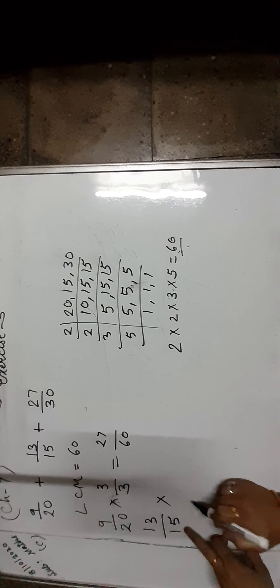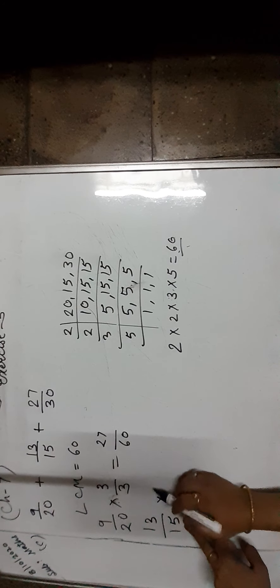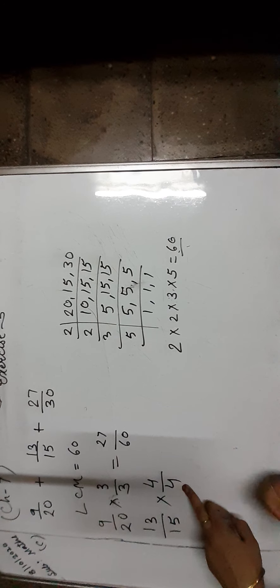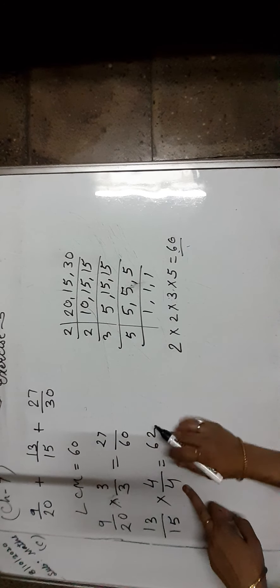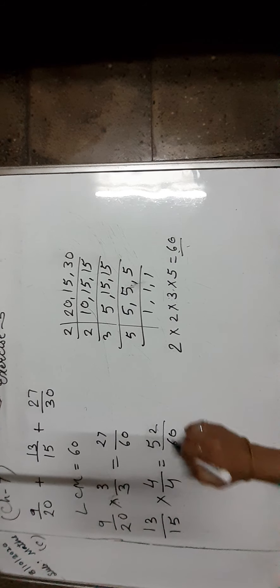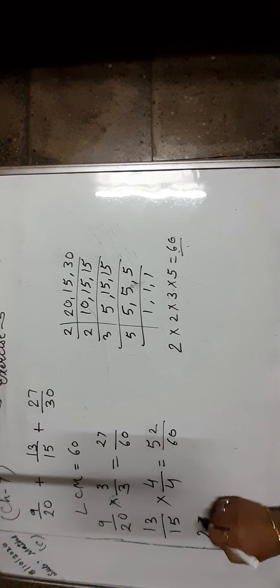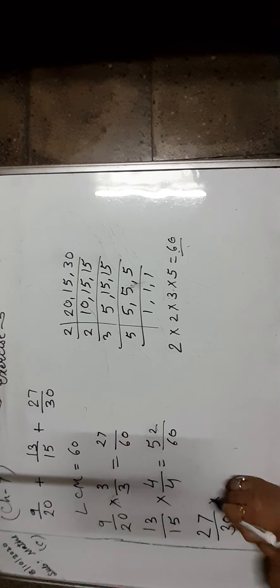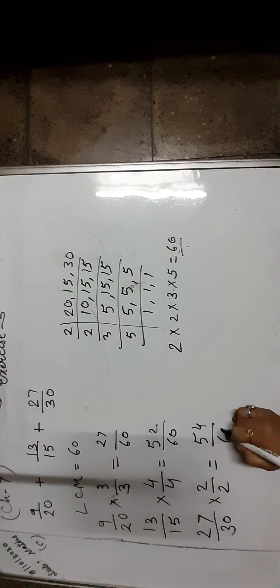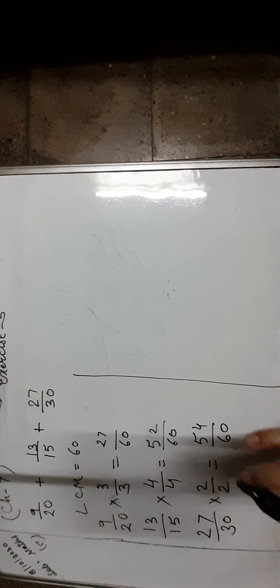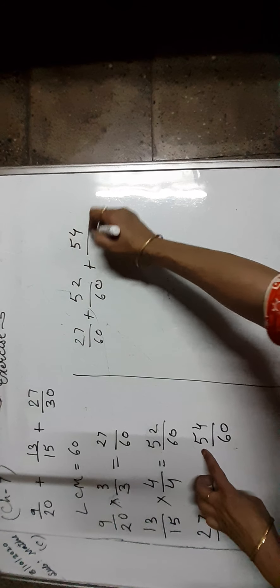Now take another fraction that is 13 upon 15. How much do we multiply? In 15 to get 60 — it is 4 times. So both numerator and denominator are multiplied by 4, which is equal to 52 upon 60. Now take the next fraction that is 27 upon 30. How much do we multiply? In 30 to get 60 — it is 2 times. So both numerator and denominator are multiplied by 2, which is equal to 54 upon 60.